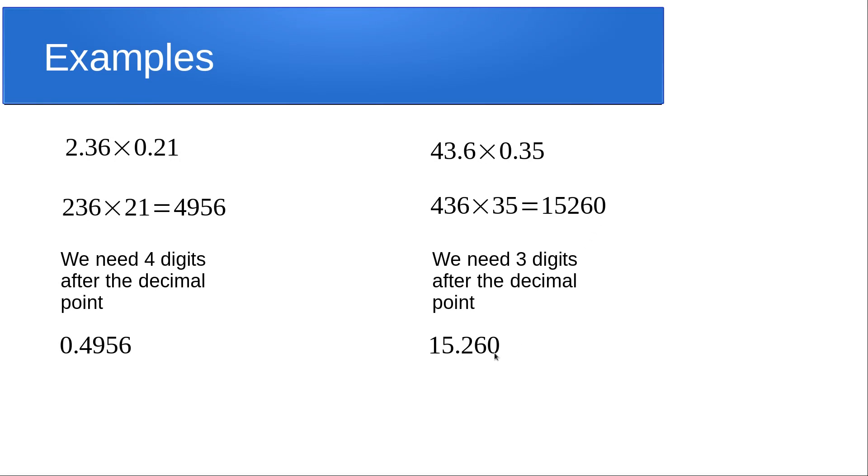Now some people make the mistake of thinking the zero doesn't need to be there and end up putting 1.526. So I'm stressing that we do this question as normal and put the decimal point such that this number has three digits after the decimal point.